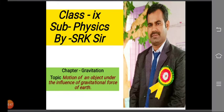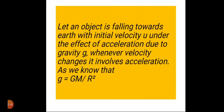If we consider an object which is falling towards Earth with initial velocity U, under the effect of acceleration due to gravity G. Whenever velocity changes, then it involves acceleration. So, what is acceleration due to gravity?